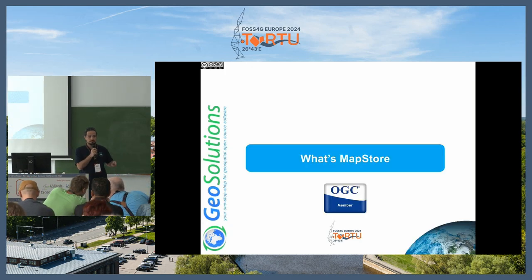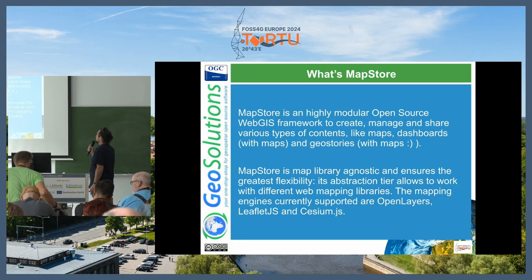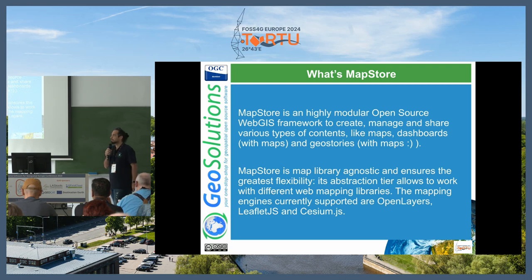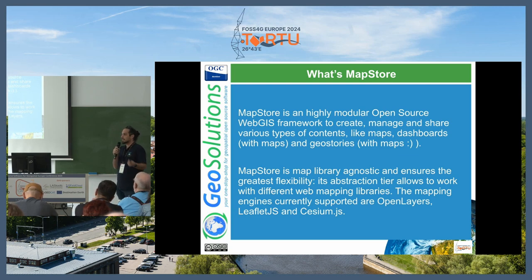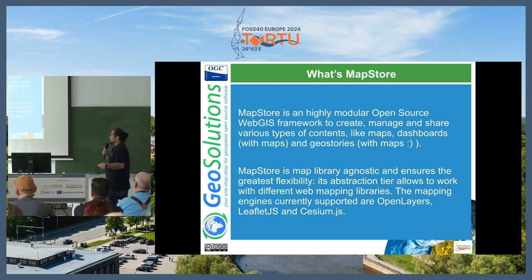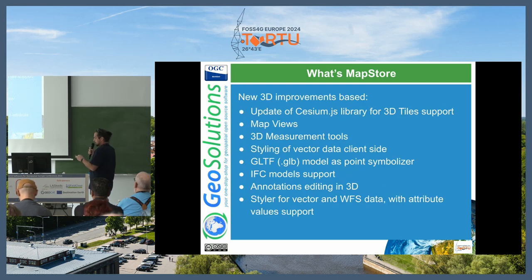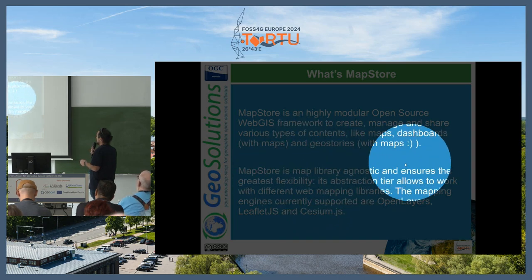This talk is about navigating and seeing typical use case scenarios in 3D using MapStore. So let's see what MapStore is first. MapStore is a highly modular open source framework that allows you to share maps, dashboards with maps, and also web pages and geostories with maps on the web in general. It's an application you can install on your server and it interacts with several open standards like WMS, WMTS, TMS, and so on.